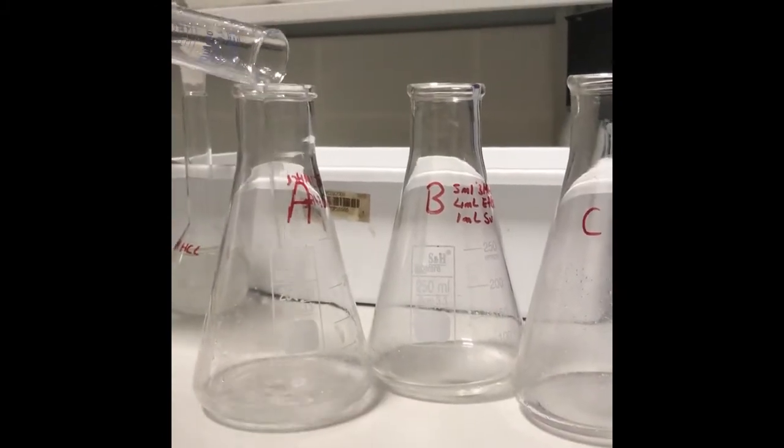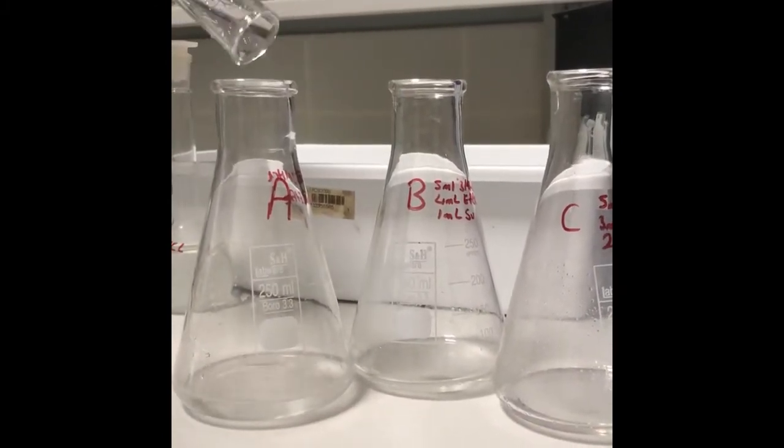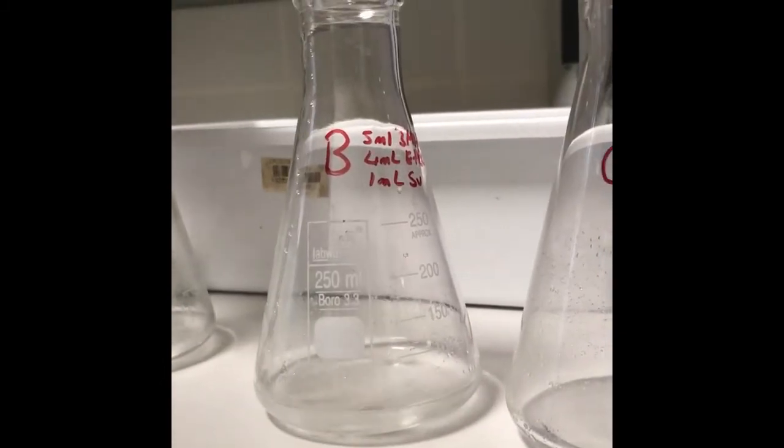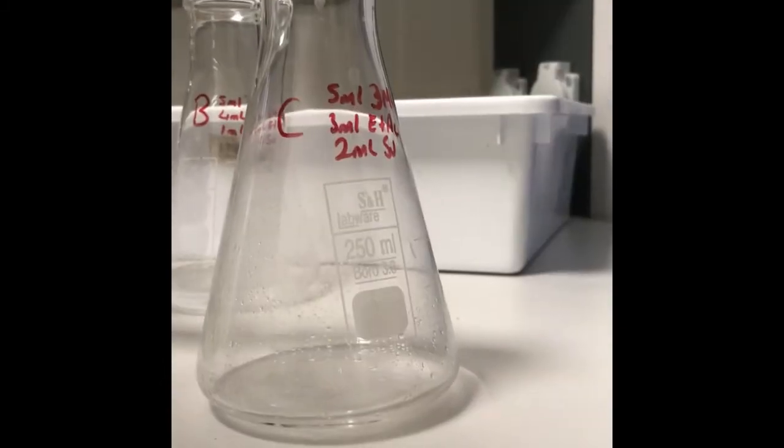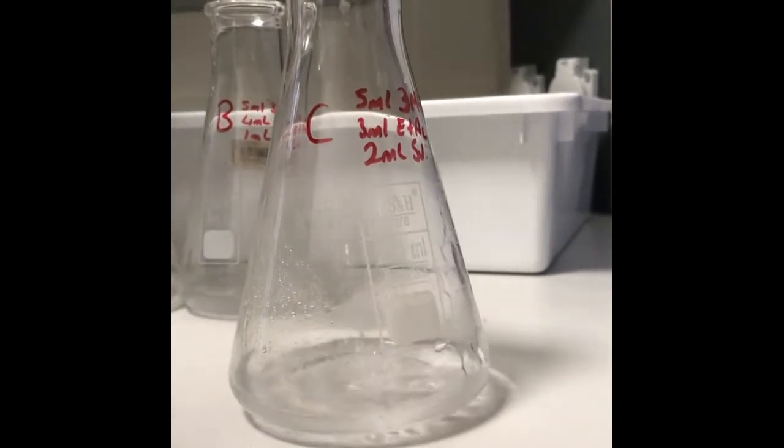Inside Erlenmeyer flask C: five milliliters of hydrochloric acid solution, three milliliters ethyl acid, and three milliliters distilled water.